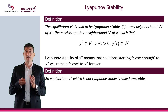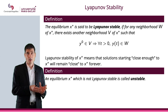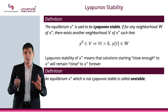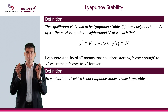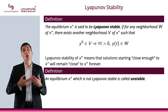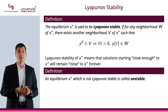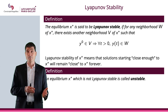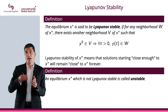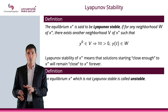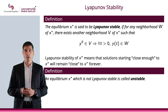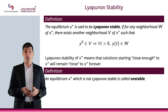In other words, it means that if you start close enough to the equilibrium, then the solution to the ODE will stay close enough to this equilibrium. If it is not the case, then x star will be called unstable. For example, for y' equals my with a positive m, the equilibrium zero is unstable — you start close to zero and you do not stay close to zero.